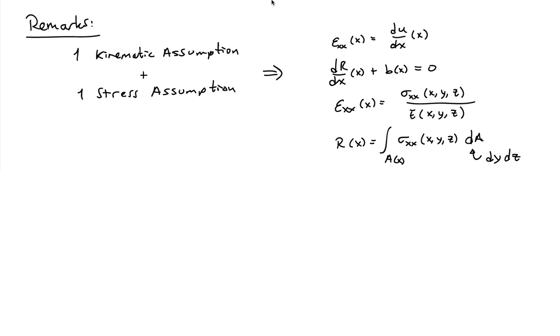A simple remark: we have one kinematic assumption and one stress assumption, and it produces this set of equations. There's a strain displacement law, an equilibrium equation, a constitutive relationship, and a definition for the resultant. One added thing different from before is that the stress on the cross section can be a function of y and z. The strains are only a function of x because of the plane sections remain plane assumption, but that doesn't restrict the stresses to be uniform on the cross section.